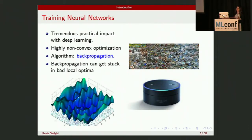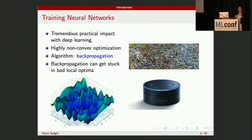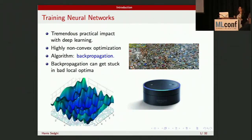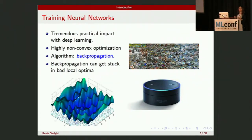Neural networks have tremendous practical impact with deep learning in various domains such as speech recognition, image understanding, video understanding, language understanding, language comprehension, personal assistance, and so on. But if you look at the optimization itself, it's a highly non-convex optimization problem. In practice, people use backprop or stochastic gradient descent, which is a first-order method, and it can get stuck in bad local optima.